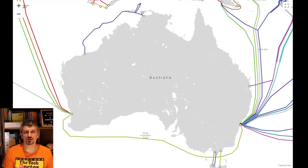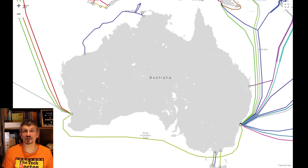This map shows the major undersea cables connecting Australia to the rest of the world, and there are several of them. The great thing about that is if something does happen to one of them, the rest will pick up the load. In that way the internet itself is quite resilient — it will keep trying and trying to find the fastest way from point A to point B.